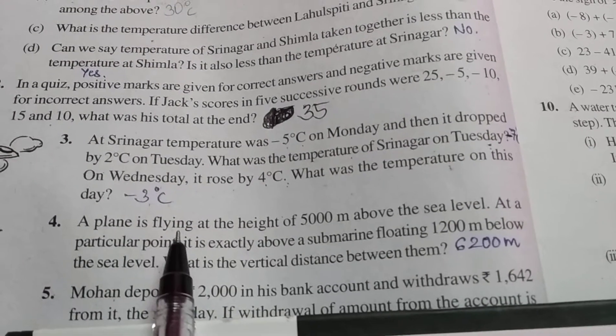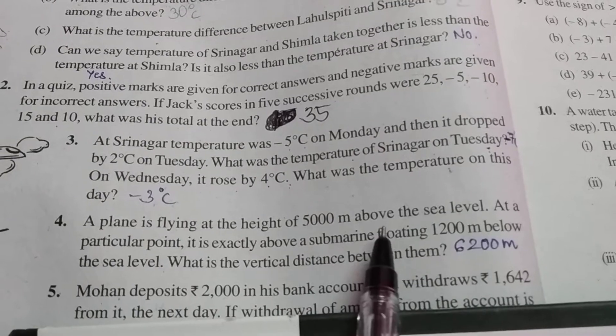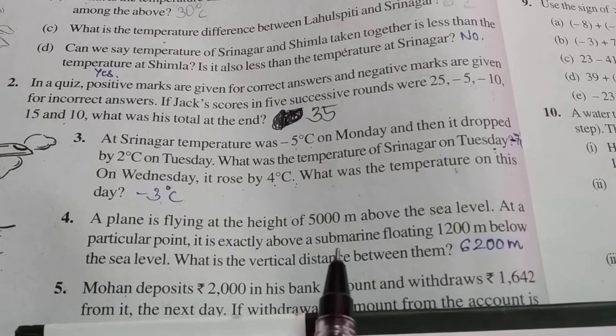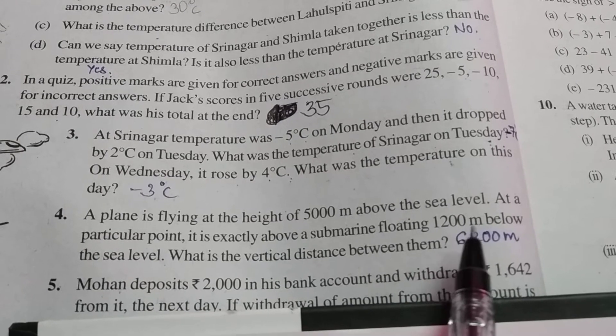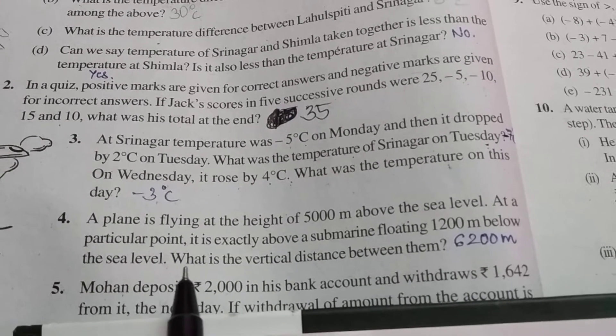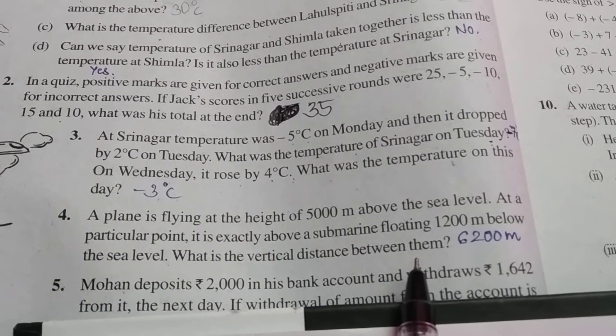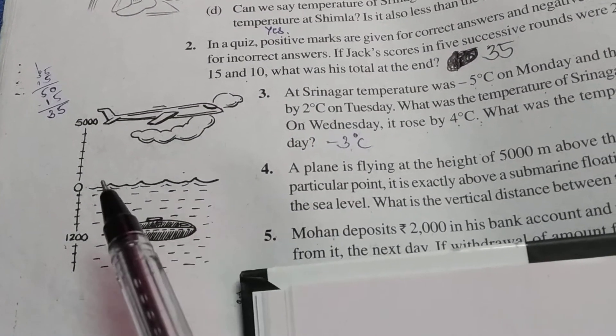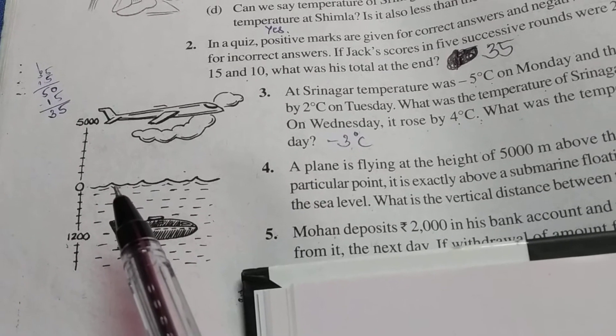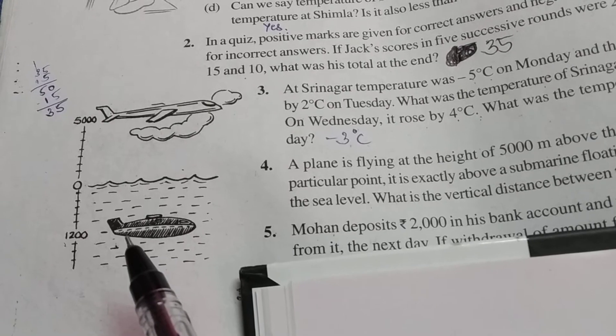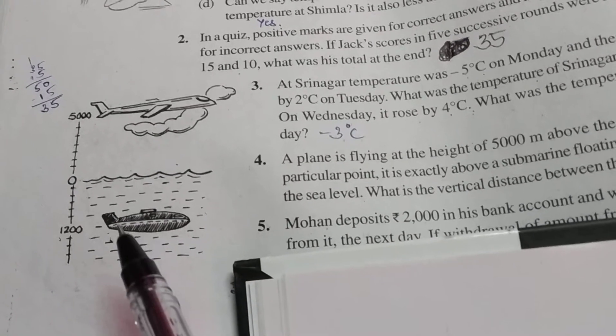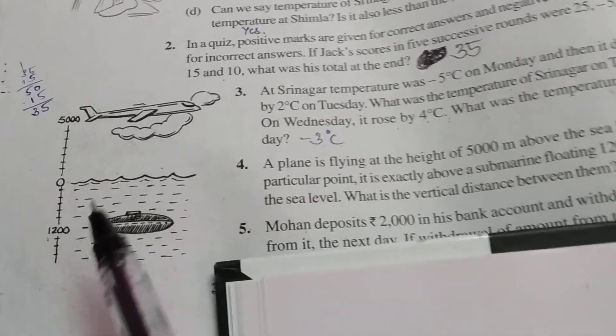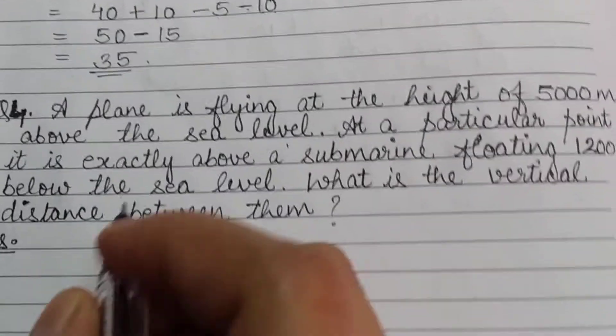A plane is flying at the height of 5000 meter above the sea level. At a particular point it is exactly above a submarine floating 1200 meter below the sea level. So we have to find this total vertical distance. Here I have written the question.